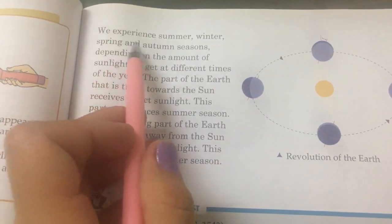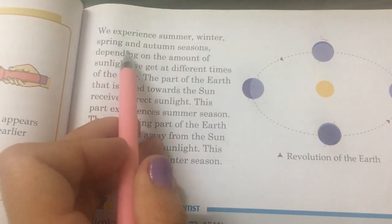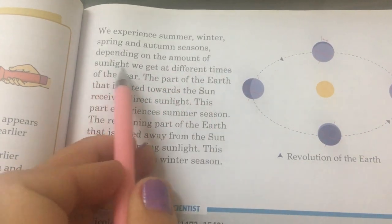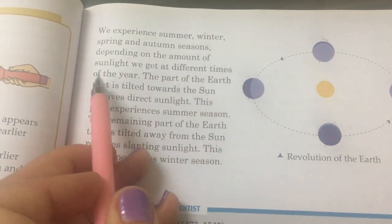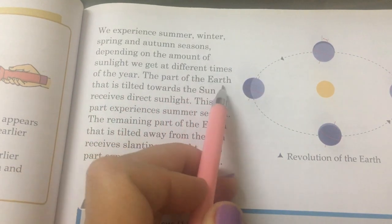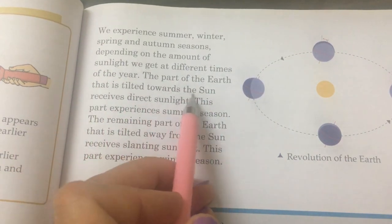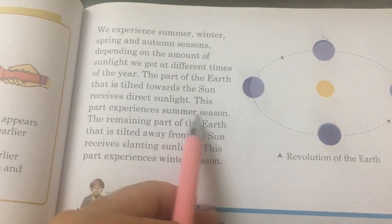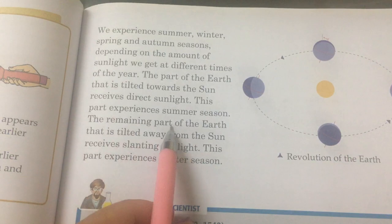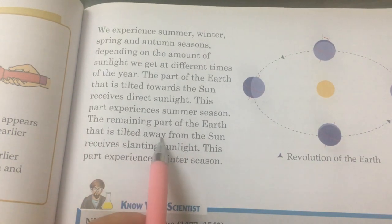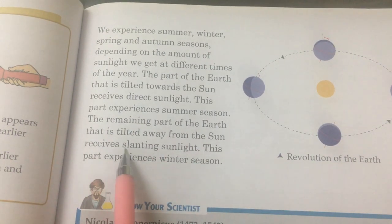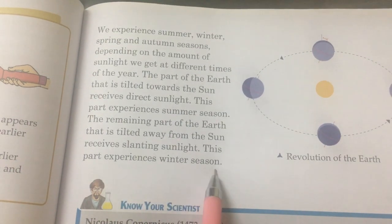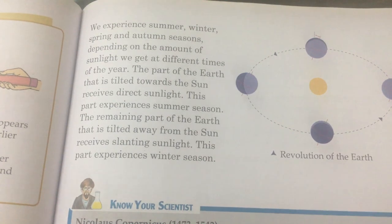We experience summer, winter, spring, and autumn seasons depending on the amount of sunlight we get at different times of the year. The part of the earth that is tilted towards the sun receives direct sunlight — this part experiences summer season. The remaining part of the earth that is tilted away from the sun receives slanting sunlight — this part experiences winter season.